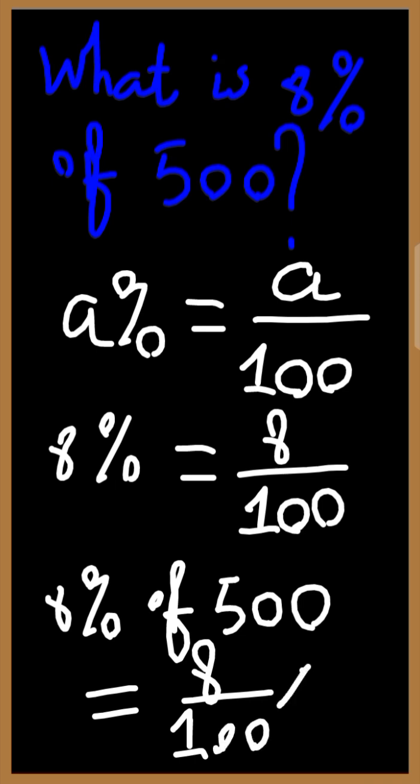Of times 500, which can be expressed as 500 all over 1. Next we have to simplify: 100 will go into 500 five times, and 100 will go into 100 one time. We'll simply be left with 5 times 8, which is equal to 40. We underline the answer.